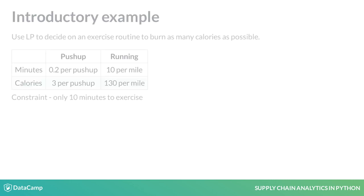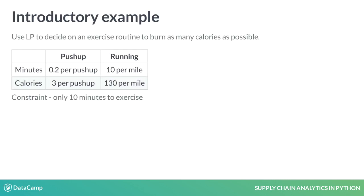To provide more context, let's start with an example. Imagine that you are deciding on an exercise routine. In this situation, you only have 10 minutes to exercise and you want to maximize the number of calories you will burn. For every push-up, it takes 0.2 minutes and burns 3 calories. For every mile ran, it takes 10 minutes and burns 130 calories. Based on a chart, what combination of push-ups and running should you do?